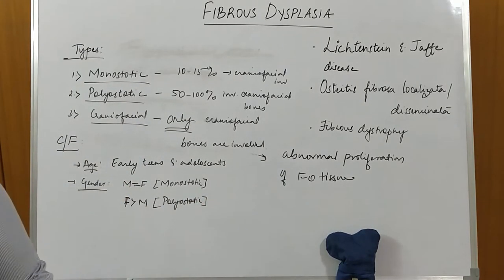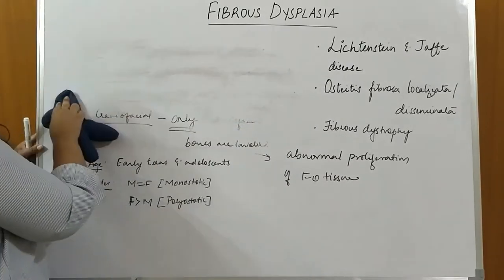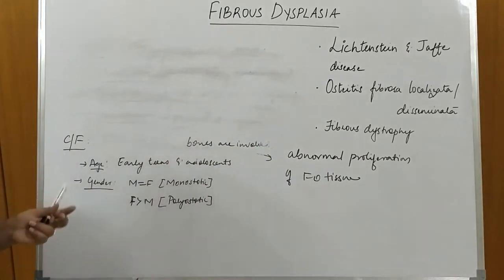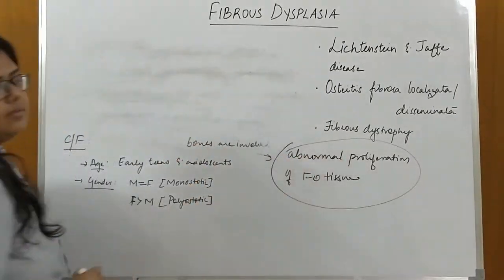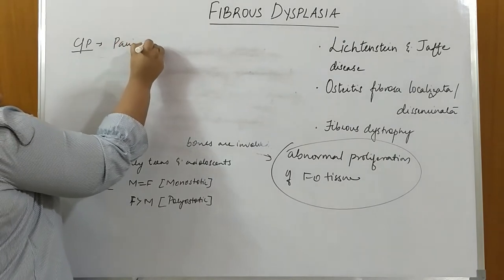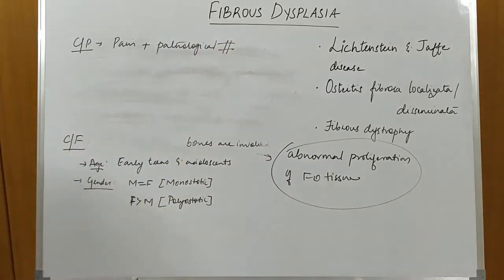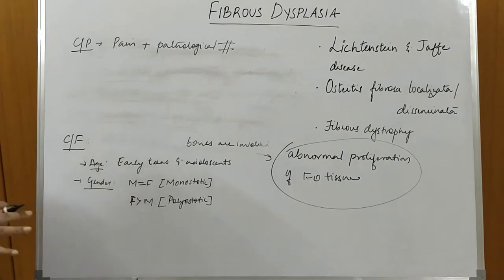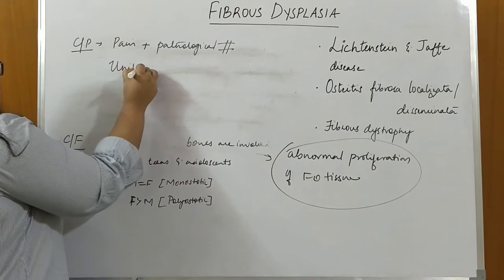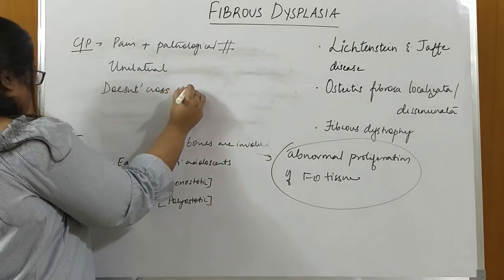Regarding clinical presentation: pain is a constant feature of Fibrous Dysplasia, so patients will generally complain of pain in the affected area. Along with pain, pathological fracture is also commonly noticed — because of abnormal proliferation of fibrous tissue, the bone is not mature enough. One very important diagnostic feature is that the swelling present in Fibrous Dysplasia is always unilateral and does not cross the suture line.